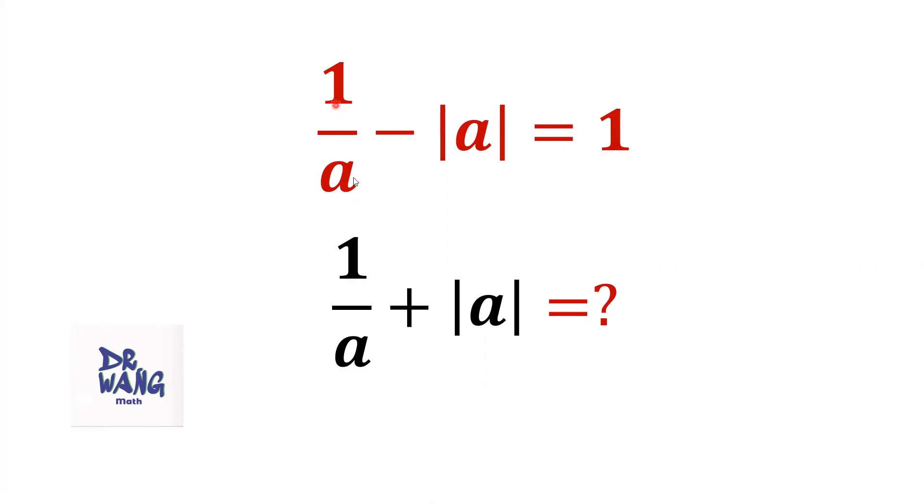If 1 over a minus absolute value of a equals 1, what is the value of 1 over a plus absolute value of a?